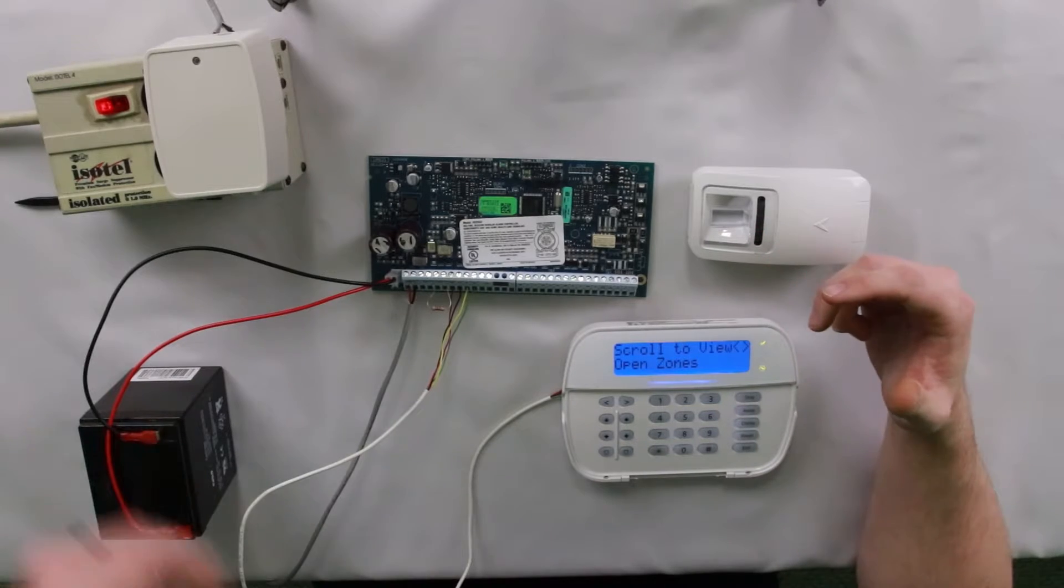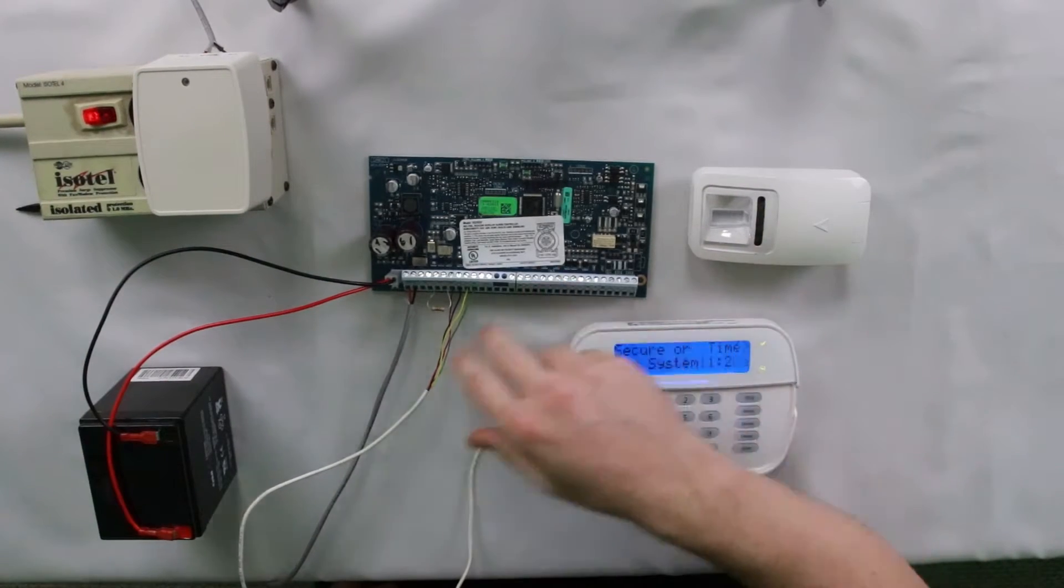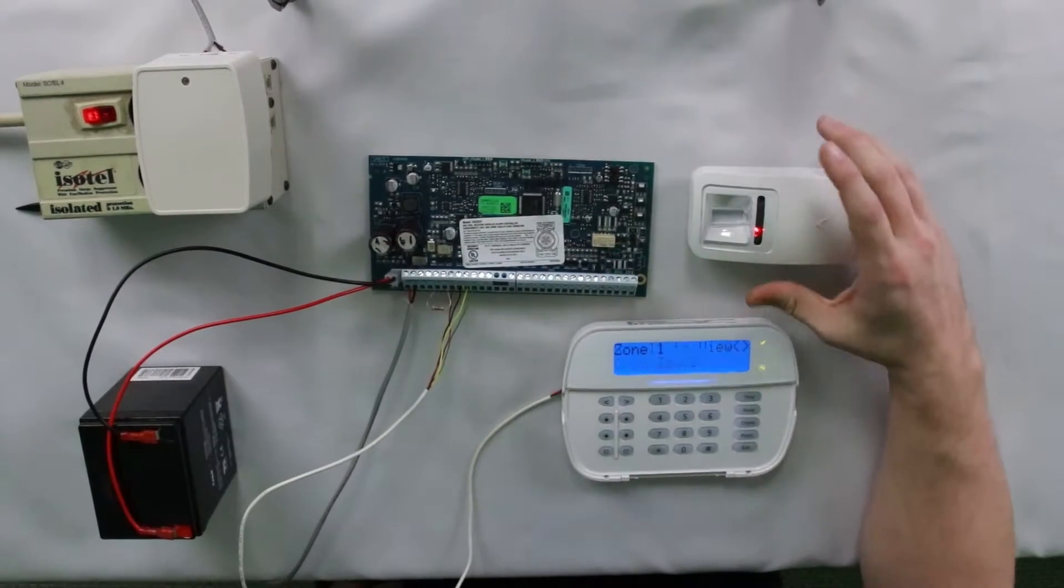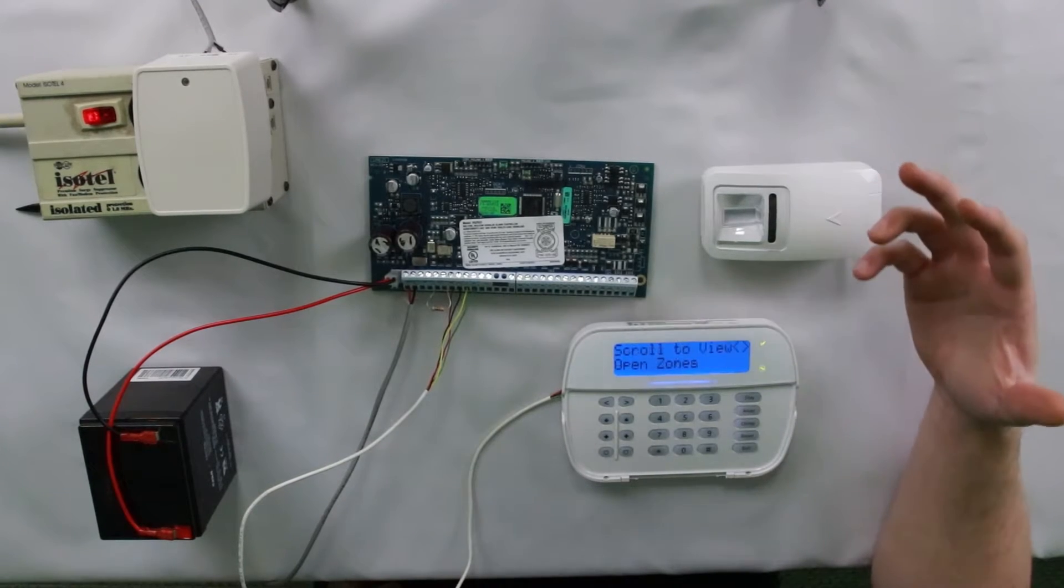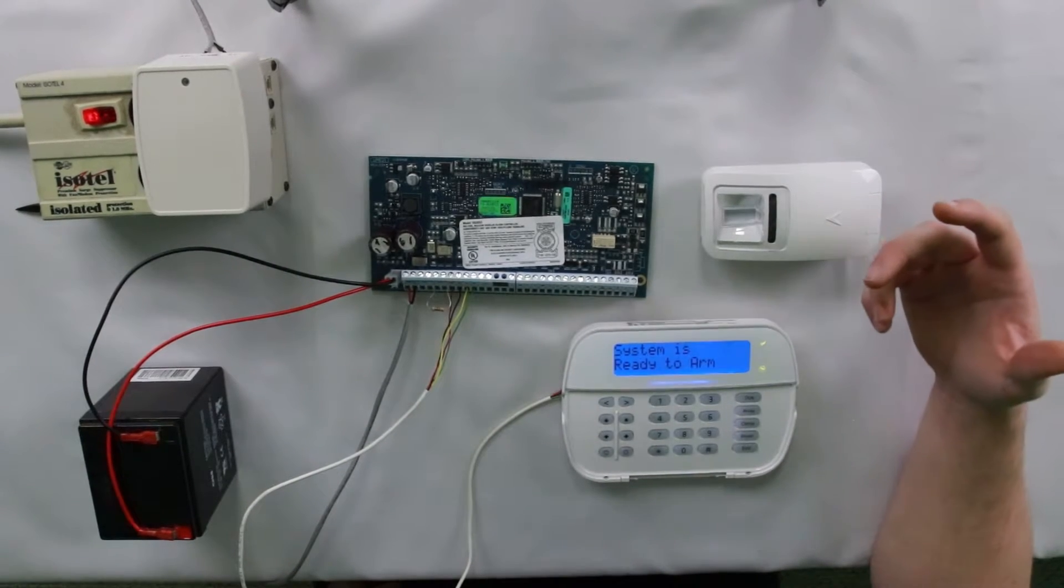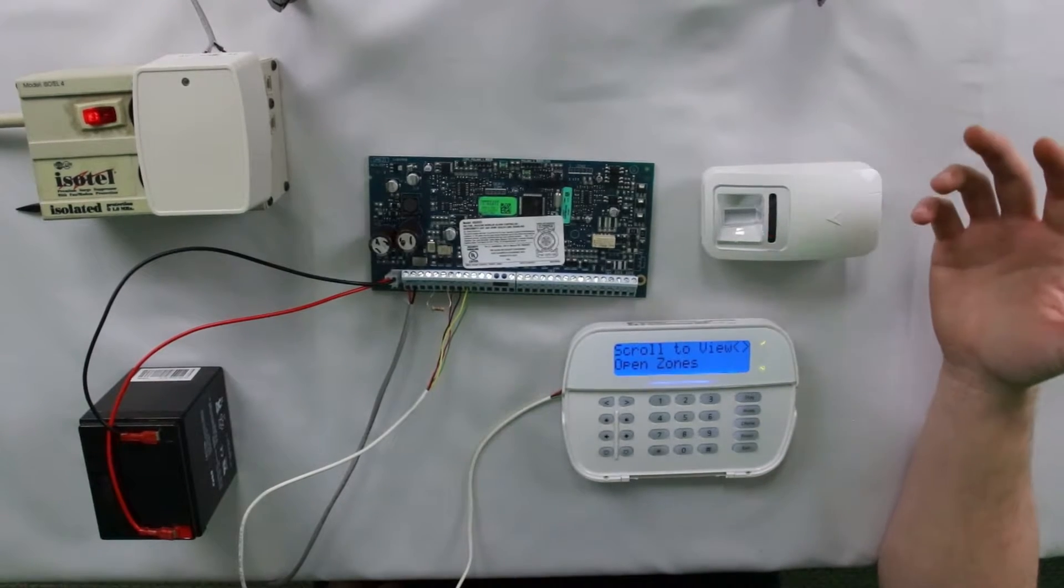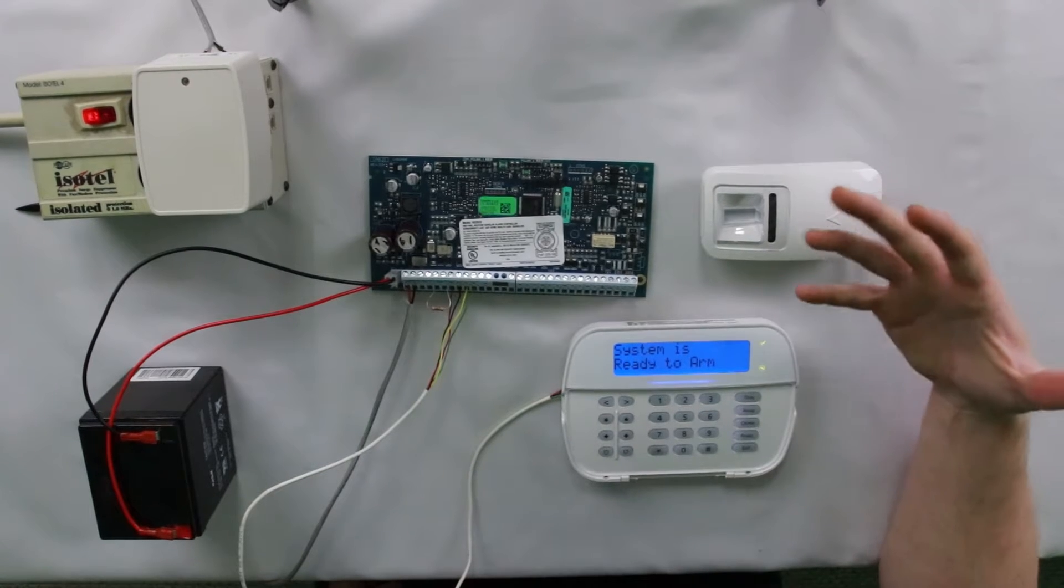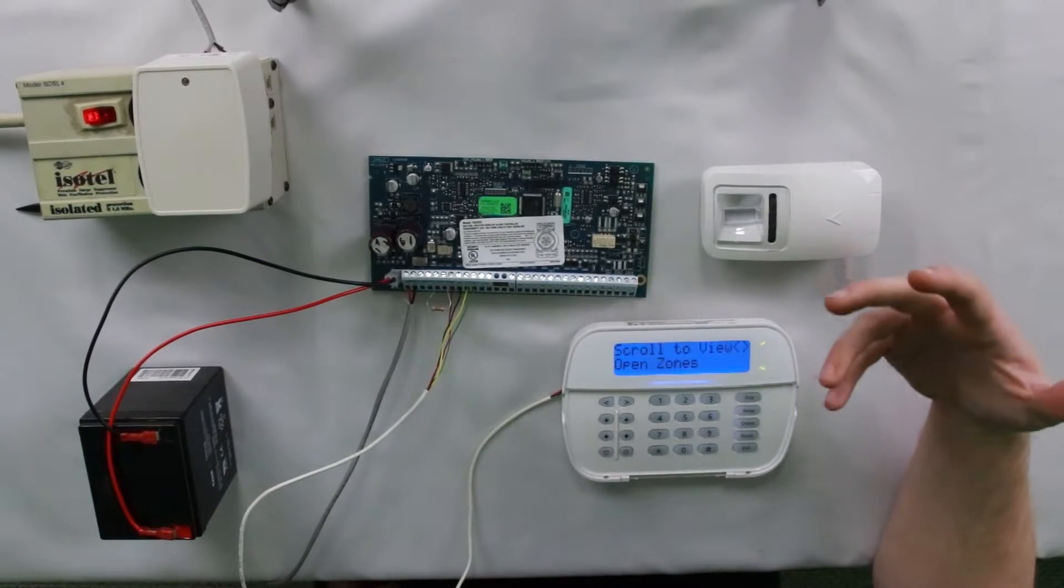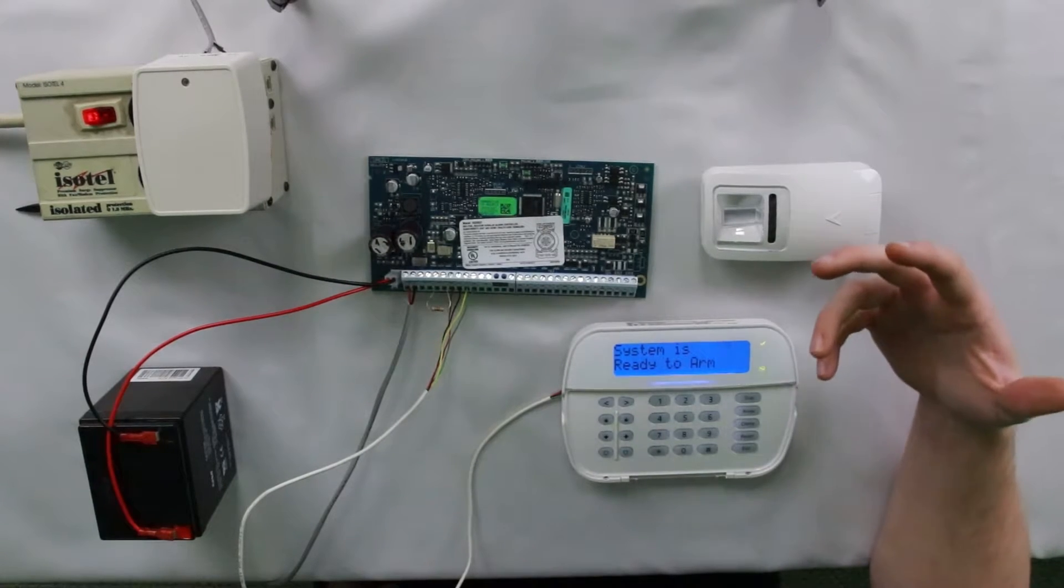All right. So as you guys can see, I got a pretty simple setup here. Basically just got a keypad, the main board, battery transformer, and our wireless device. You guys are going to have to pretend a little bit here with me because I don't have any batteries that are low enough to show a low battery. They're either all dead or they're still showing good. So we're just going to have to pretend that these troubles exist, and I'm going to show you the process on what to do if you run into this issue where the trouble gets stuck.